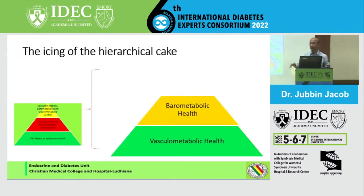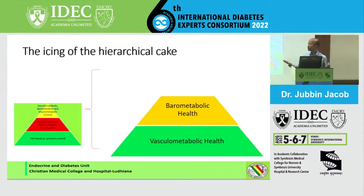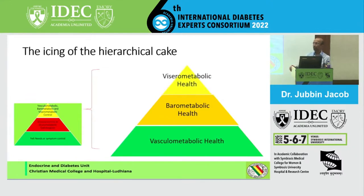From the ACE guidelines, it is also an obesity-based guideline. So we have what we call barometabolic outcomes — we want to improve weight. Previously our main goal was to avoid weight gain, but now we want to see 5% weight reduction. If you want to see diabetes remission, you need at least 15% weight reduction. After vascular metabolic health, you need to ask yourself whether you can get better barometabolic health. On top of the pyramid is viscerometabolic health — improvement in liver steatosis, improvement in obstructive sleep apnea, and gonadal health, including reproductive health for women and better testosterone levels for men, achievable with weight reduction and glucose control.